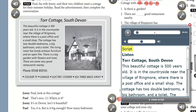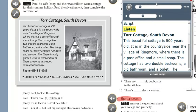Tapescript 5.2. Listen. Tor cottage, South Devon. This beautiful cottage is 500 years old. It is in the countryside near the village of Ringmore where there is a post office and a small shop. The cottage has two double bedrooms, a big bathroom and a toilet.